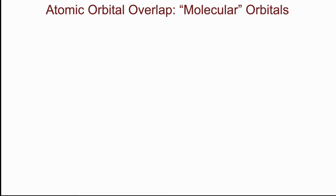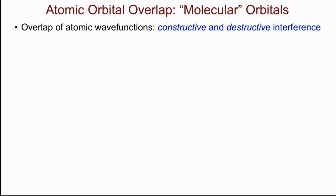When atomic orbitals overlap, the resultant orbitals are called molecular orbitals. Atomic wave functions can overlap either constructively or destructively. Let us look at the overlap of p-orbitals as an example.